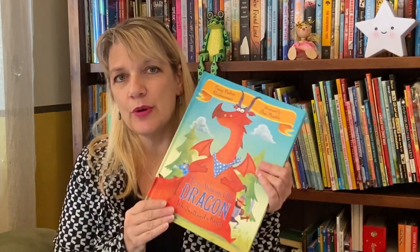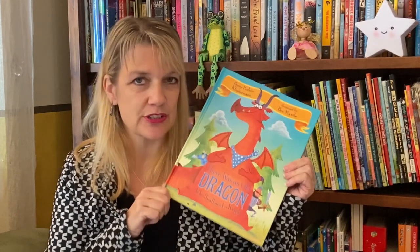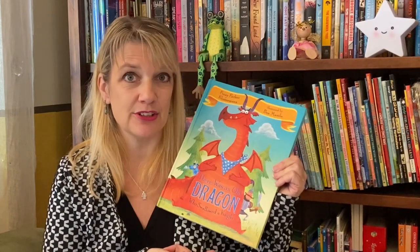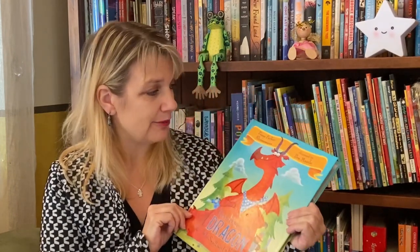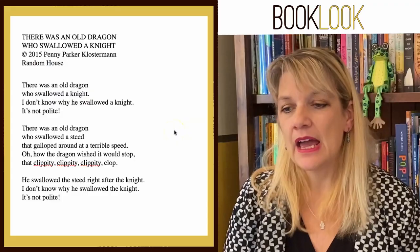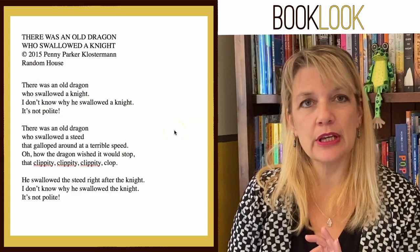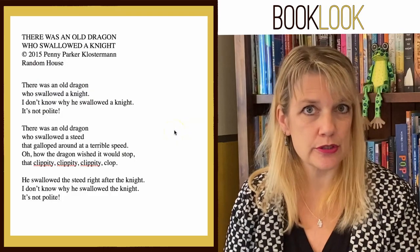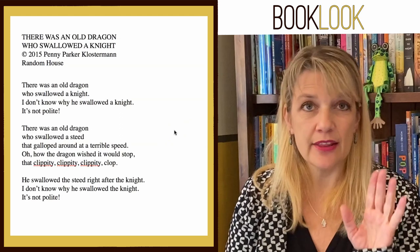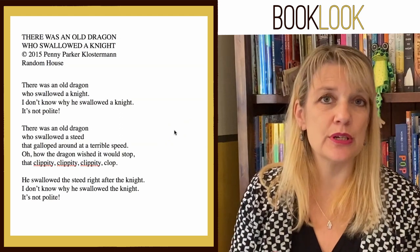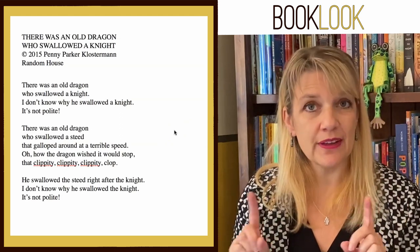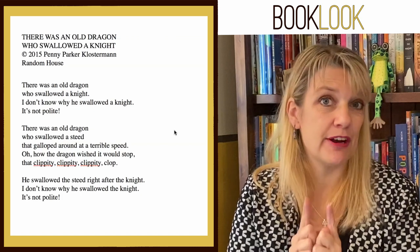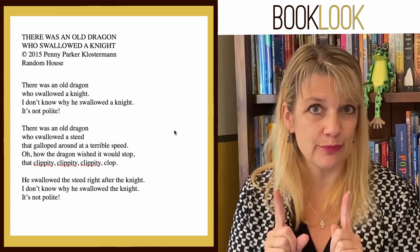Let's go over to the computer and take a closer look at what's really going on. I do want to mention that the wonderful illustrations are by Ben Mantle — I just love this dragon. I've written out the first couple of stanzas that I just read, and the first thing I want to do is look at the meter. One thing happening in this book is varied meter.